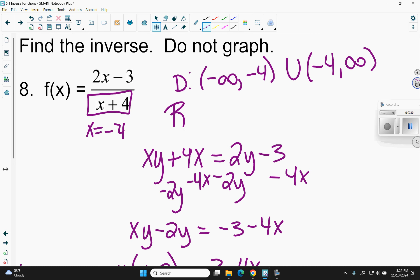And the range, we have to think about the horizontal asymptote. The degree of the numerator is the same as the degree of the denominator. So my horizontal asymptote would be y equals 2. So my range is going to be everything but that. Negative infinity to 2, union 2 to infinity.